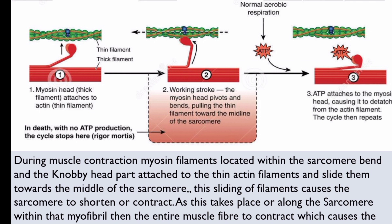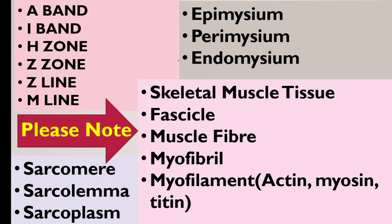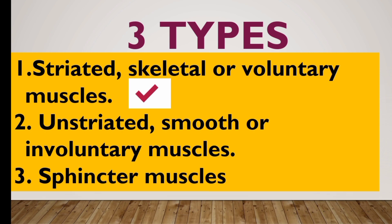The thin actin filament slides as the myosin head pulls it, applying contraction. This process repeats, causing the muscle to contract and relax. This is how striated and skeletal muscles enable voluntary movement in the body. We have now completed three types of muscle tissue and will continue in the next class.